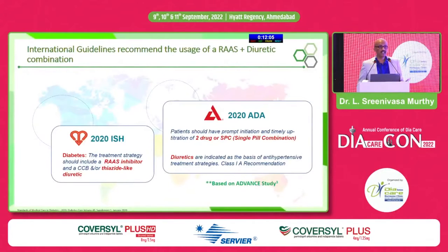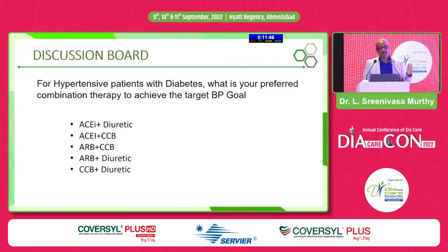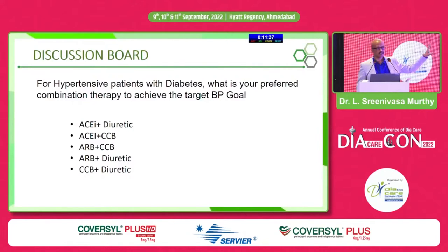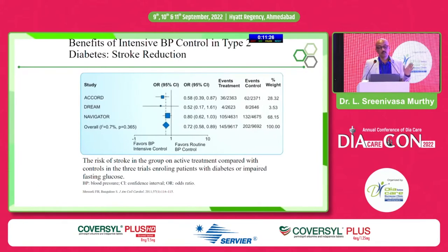International guidance recommends RAS plus diuretic combination as anti-hypertensive treatment. Both ISH and ADA recommend this, with the ADA stating two-drug and single pill combinations are now recommended. For hypertensive patients with diabetes, the preferred combination therapies are: ACE/ARB + diuretic or CCB, ARB + CCB, or ARB + diuretic + CCB — all without beta blockers, though in the Indian context we do use beta blockers in certain niche patients.